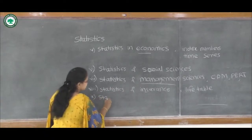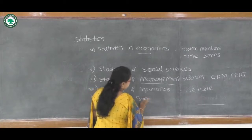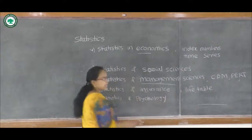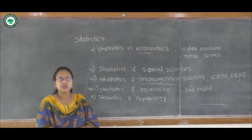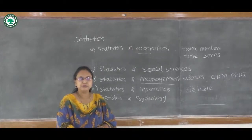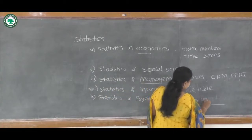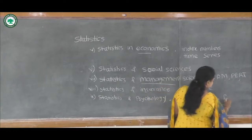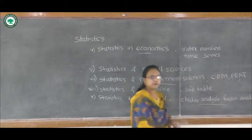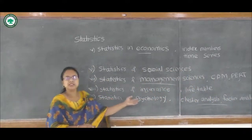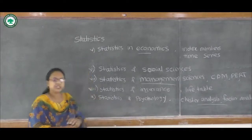The next point is statistics and psychology. In psychology, we need to study productivity and emotional quotient, or productivity and intelligence. In those cases, many statistical tools become essential such as cluster analysis or factor analysis. These types of tools are required to study statistics in psychology — for example, to study productivity.